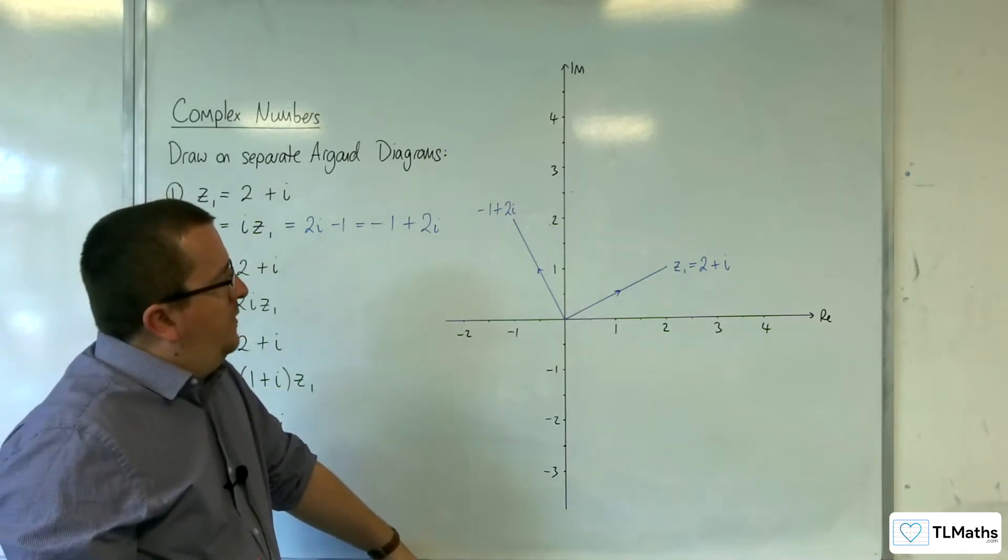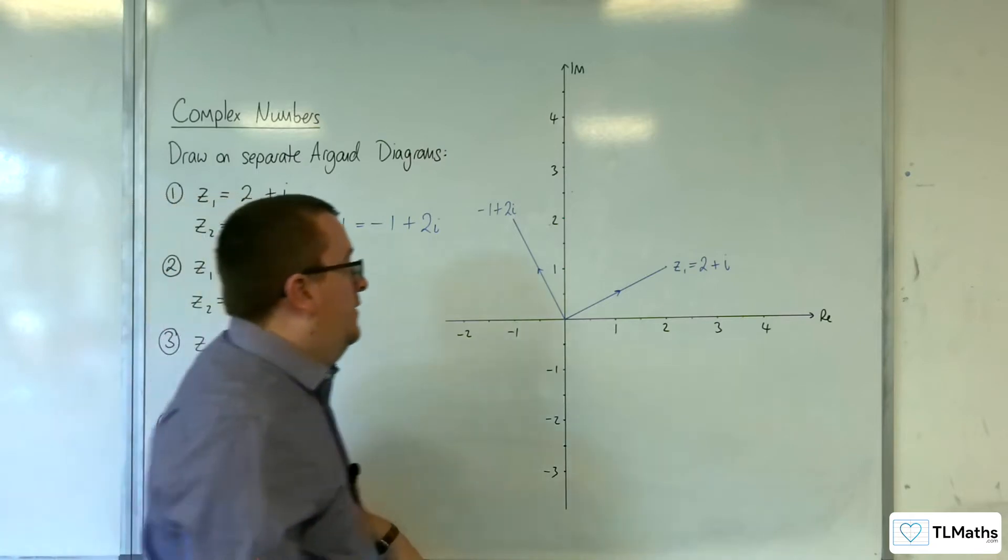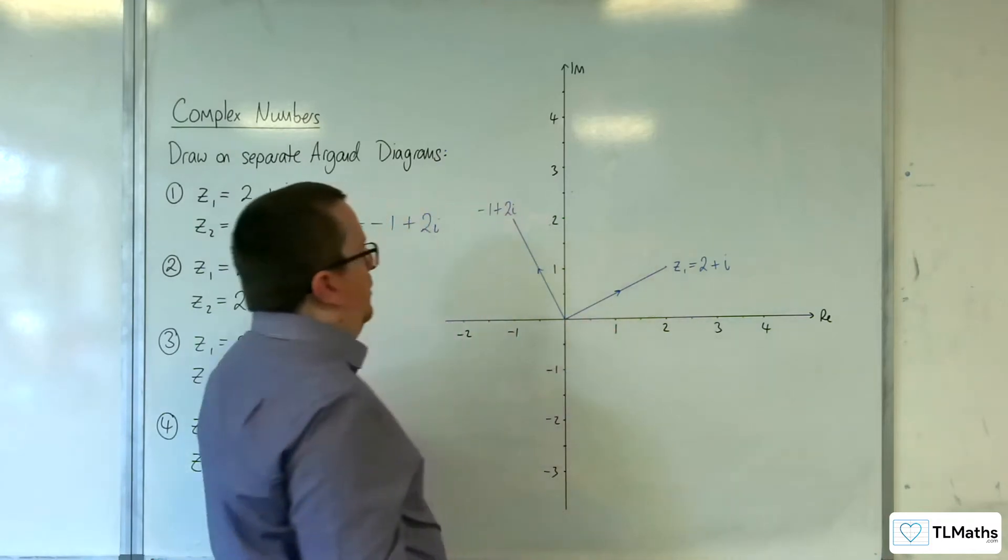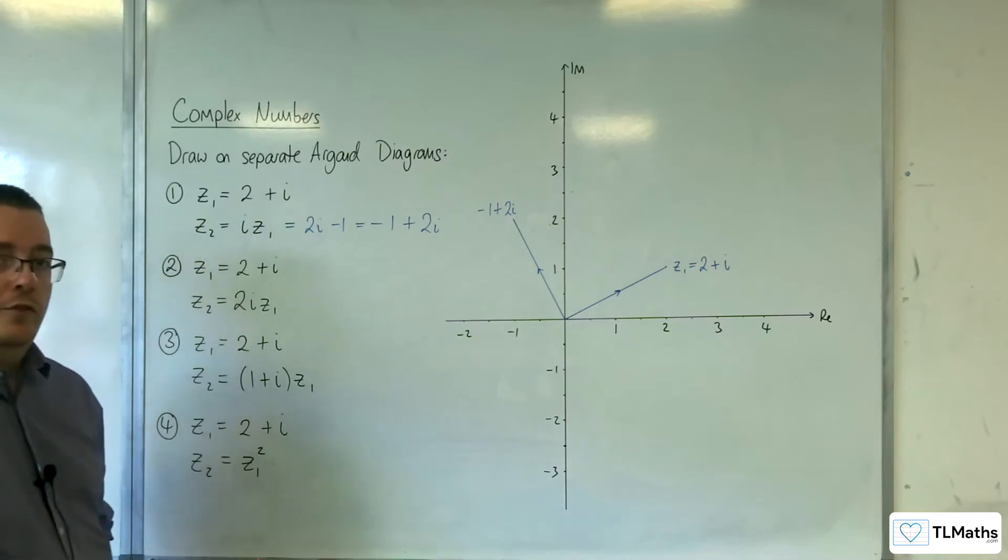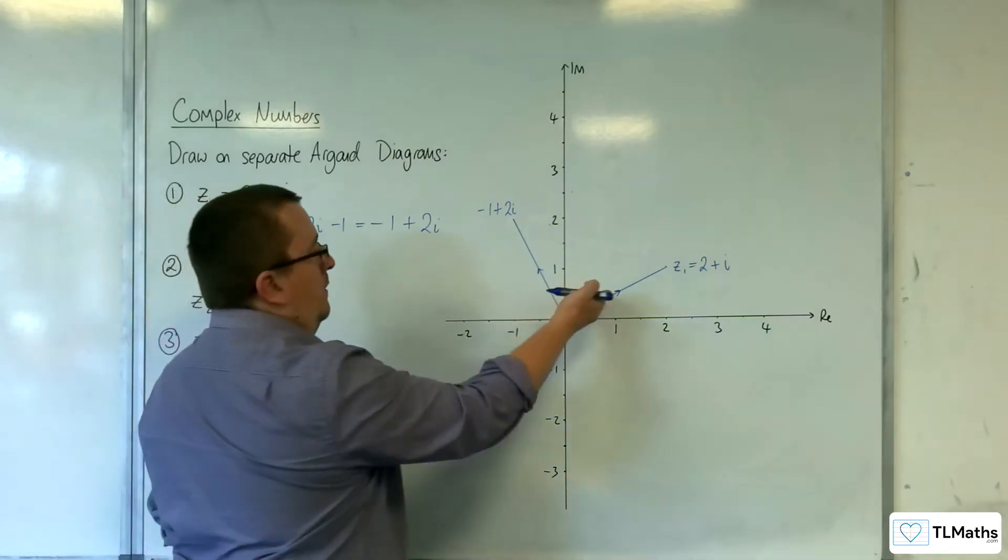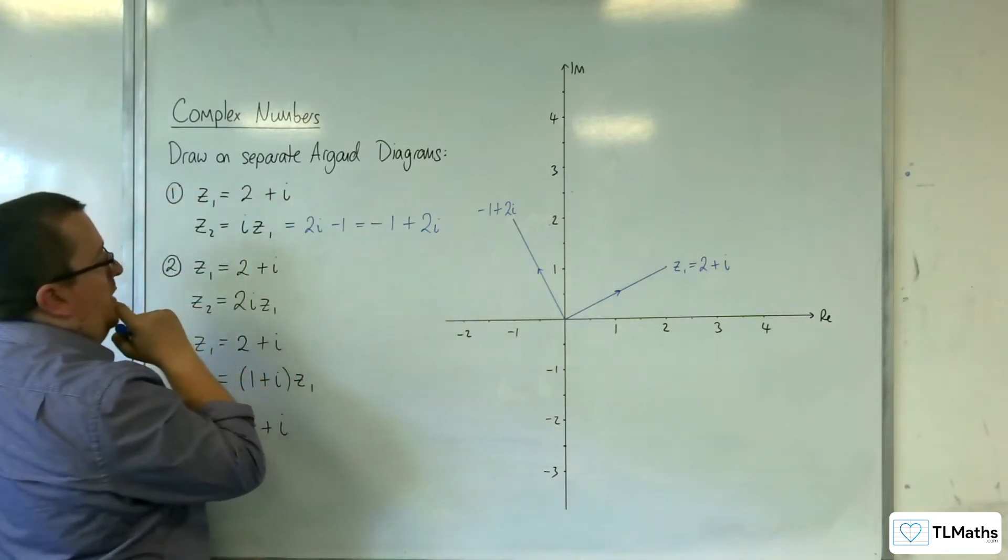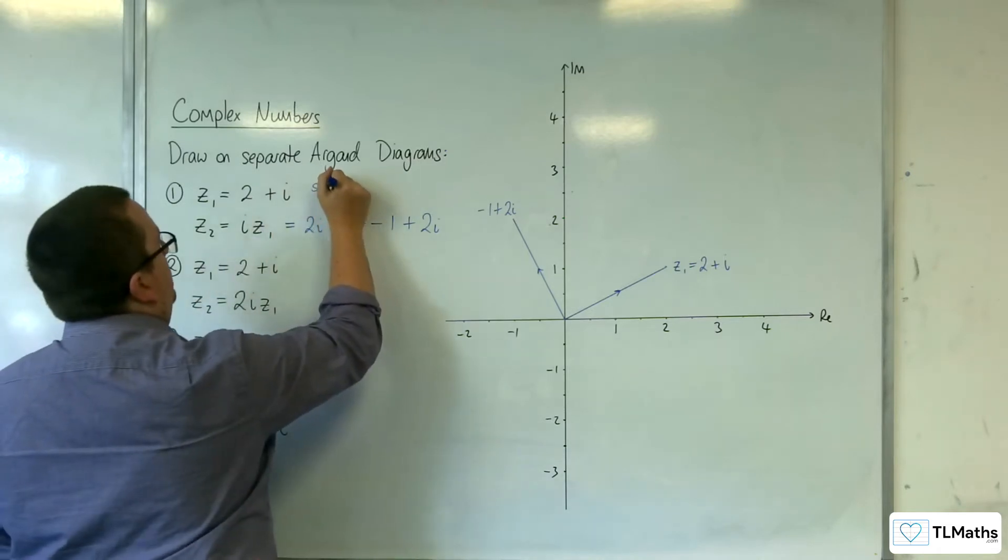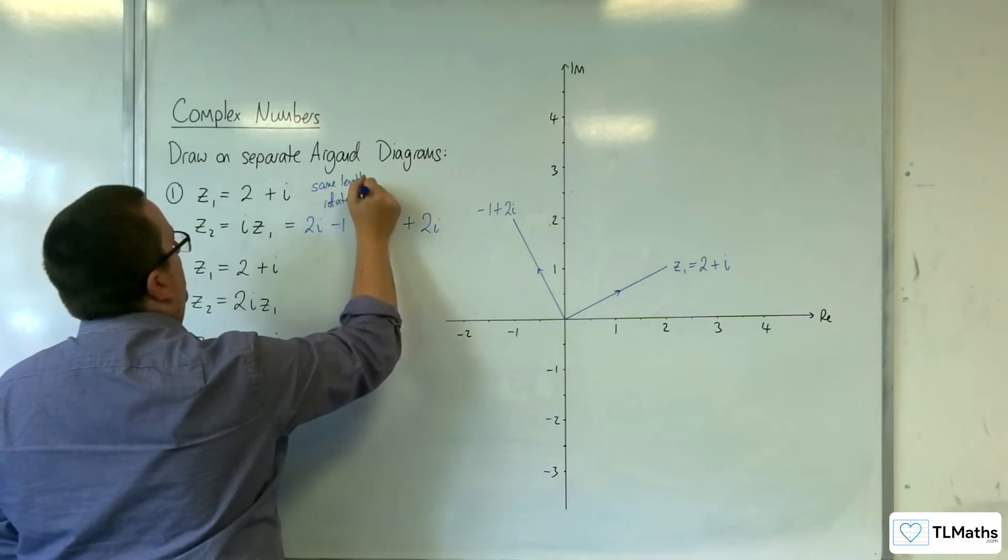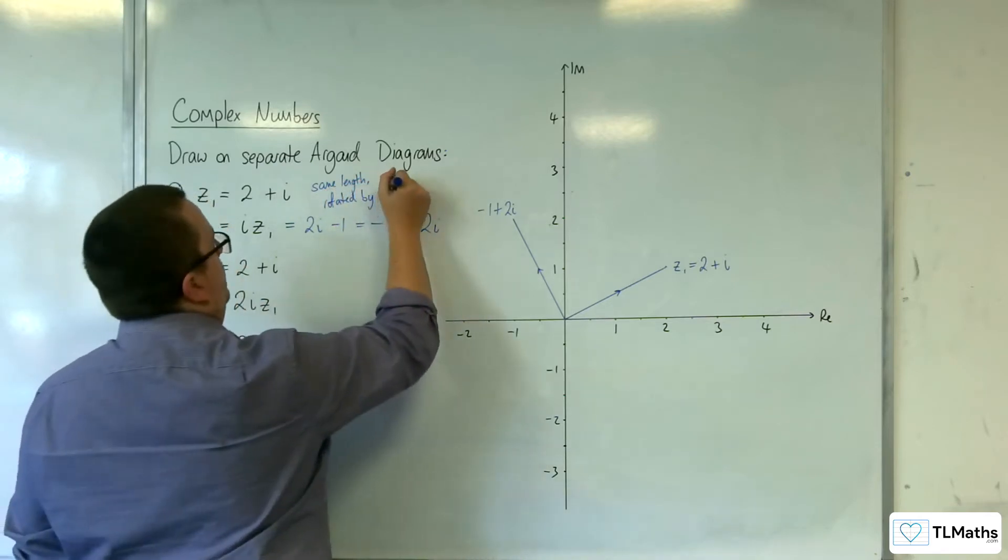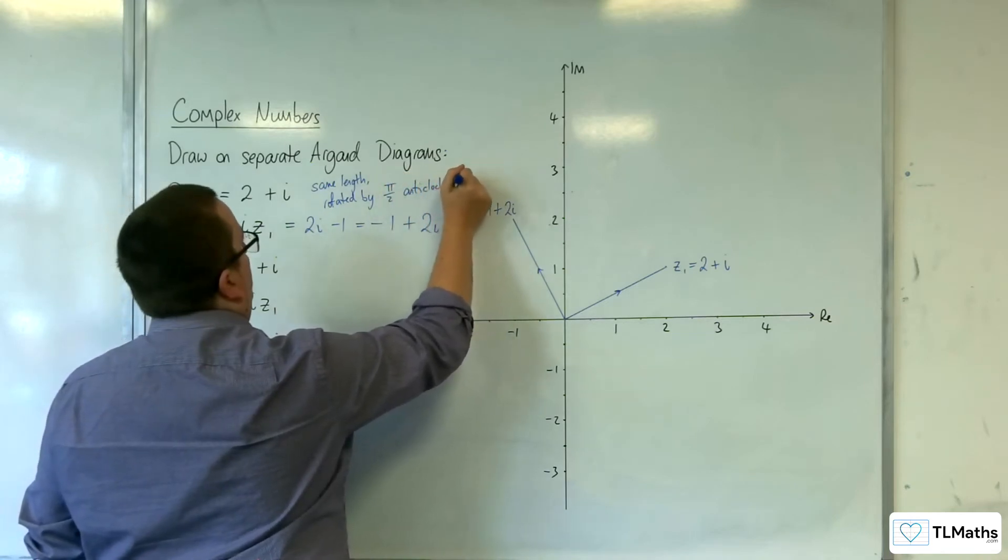The actual length of the complex number hasn't changed. So what has seemed to happen is that it's been rotated around, this is a right angle. It's been rotated around by π over 2, going anti-clockwise. Same length, rotated by π over 2 anti-clockwise.